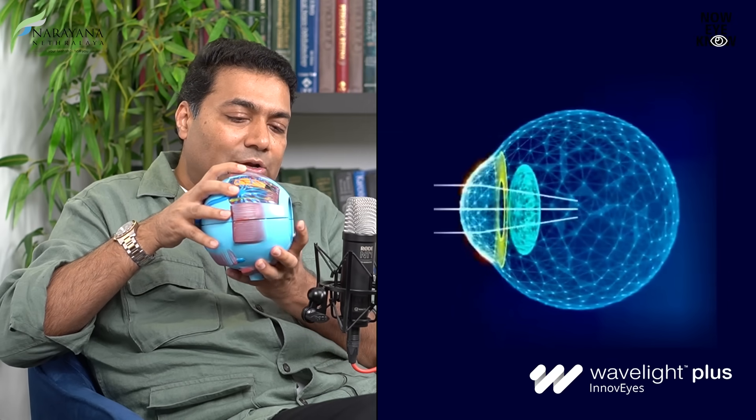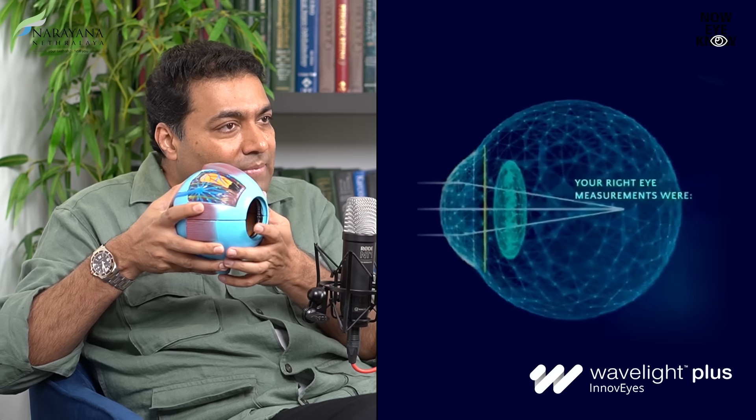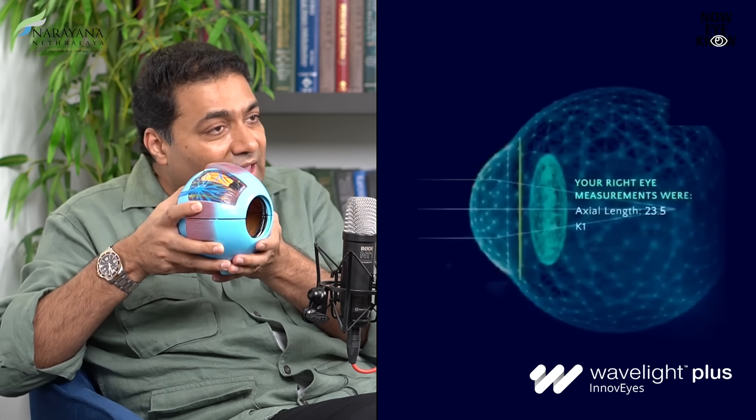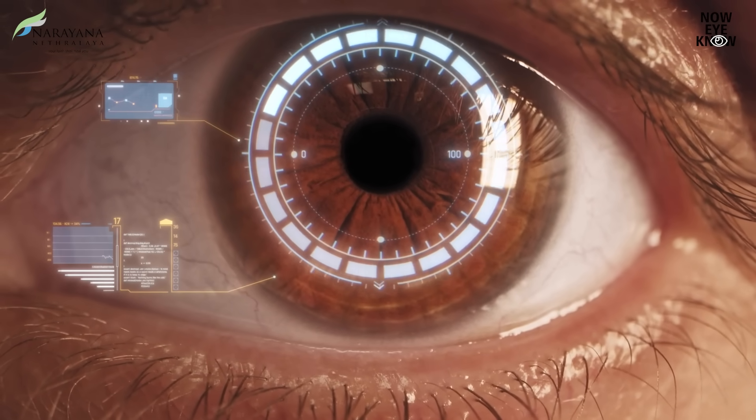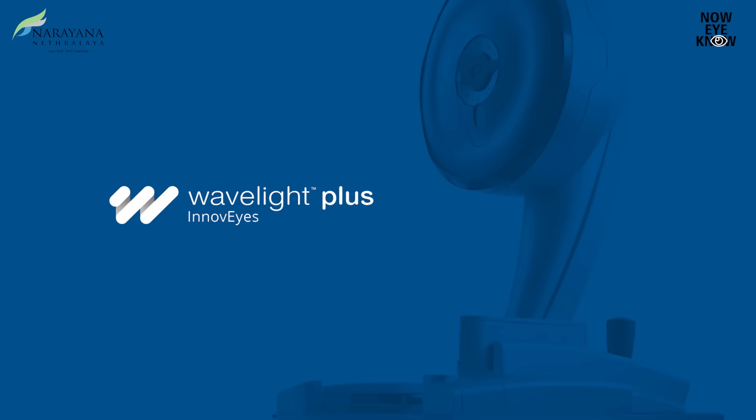Now, if I'm able to map the entire eye with different mediums — the cornea, the refractive index of your lens, your pupil size, retina, everything, the eyeball shape — and I create a model, a virtual model, the machine will try to look at that virtual model and give a treatment exactly for patient Ramesh or patient Ramya. And this is what is called WaveLight Plus.